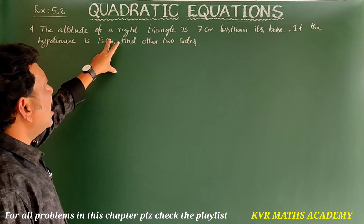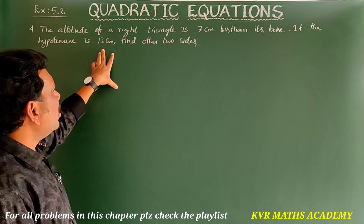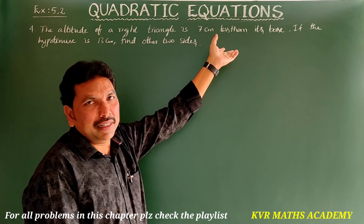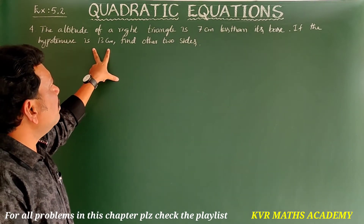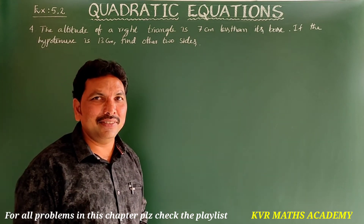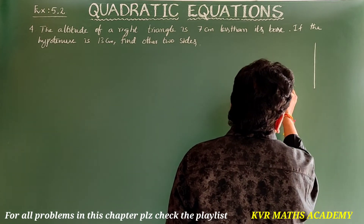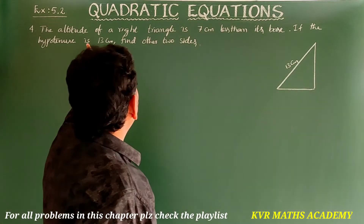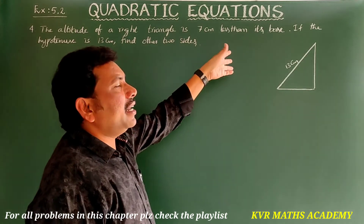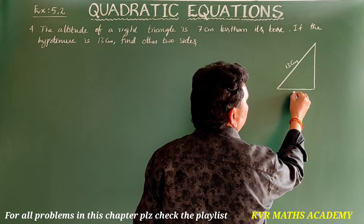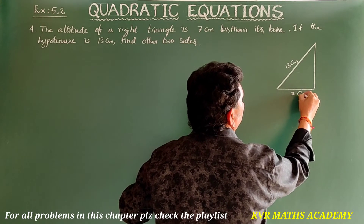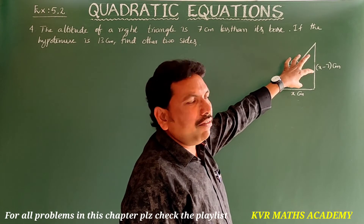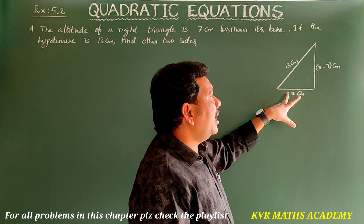Fourth question: The altitude of a right triangle is 7 centimeters less than its base. If the hypotenuse is 13 centimeters, find the other two sides. Suppose the base is x centimeters, then the altitude is x minus 7 centimeters. We must write this as a quadratic equation and then find the side lengths.